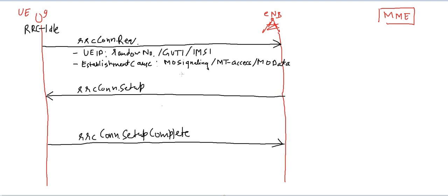MO signaling means the UE is either trying to attach to the network, updating its tracking area, or detaching from the network. MT access is used when paging comes to the UE — the UE has to send this RRC Connection Request in response to the paging message. MO data is used when the UE is trying to get uplink resources from the network.